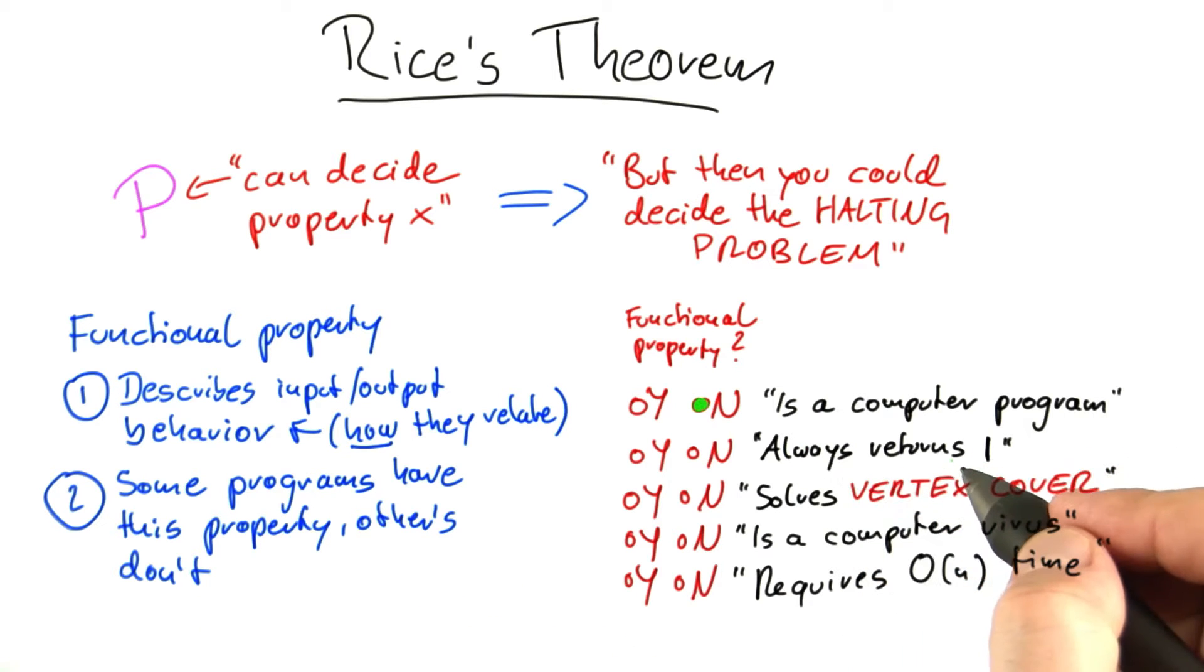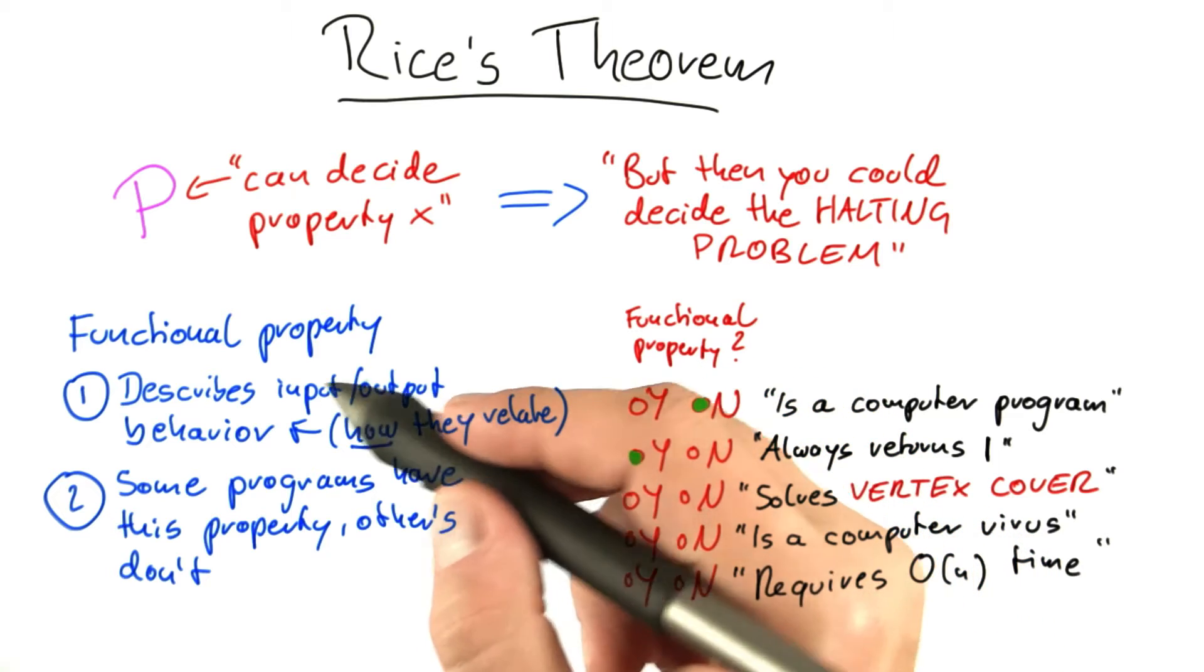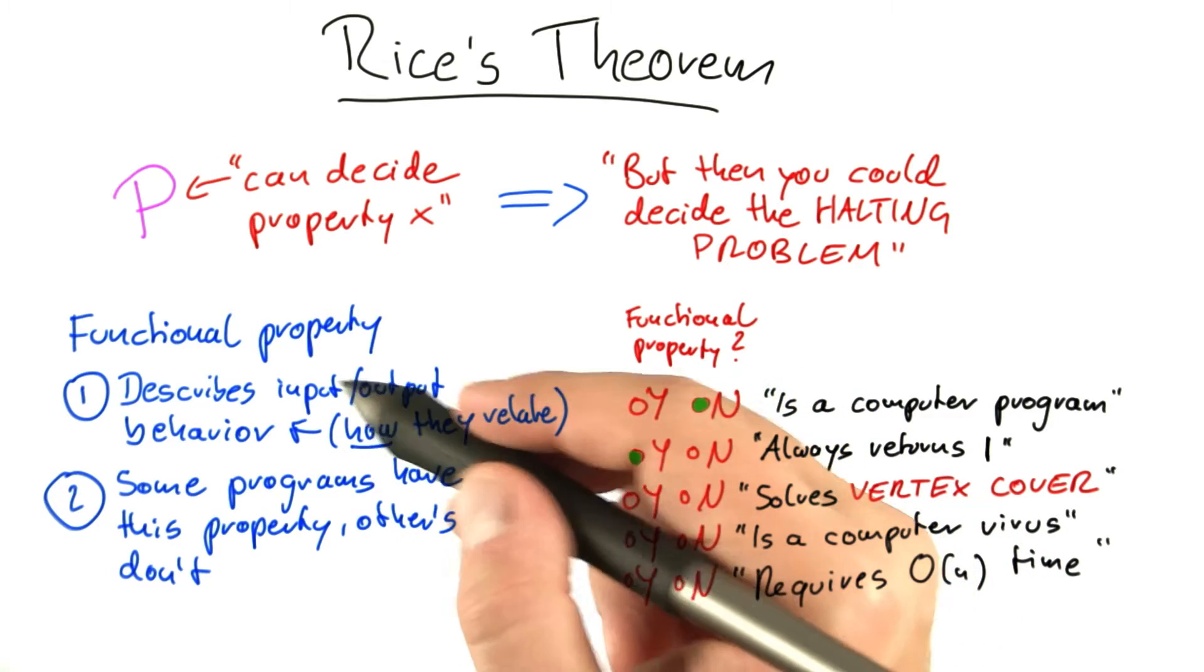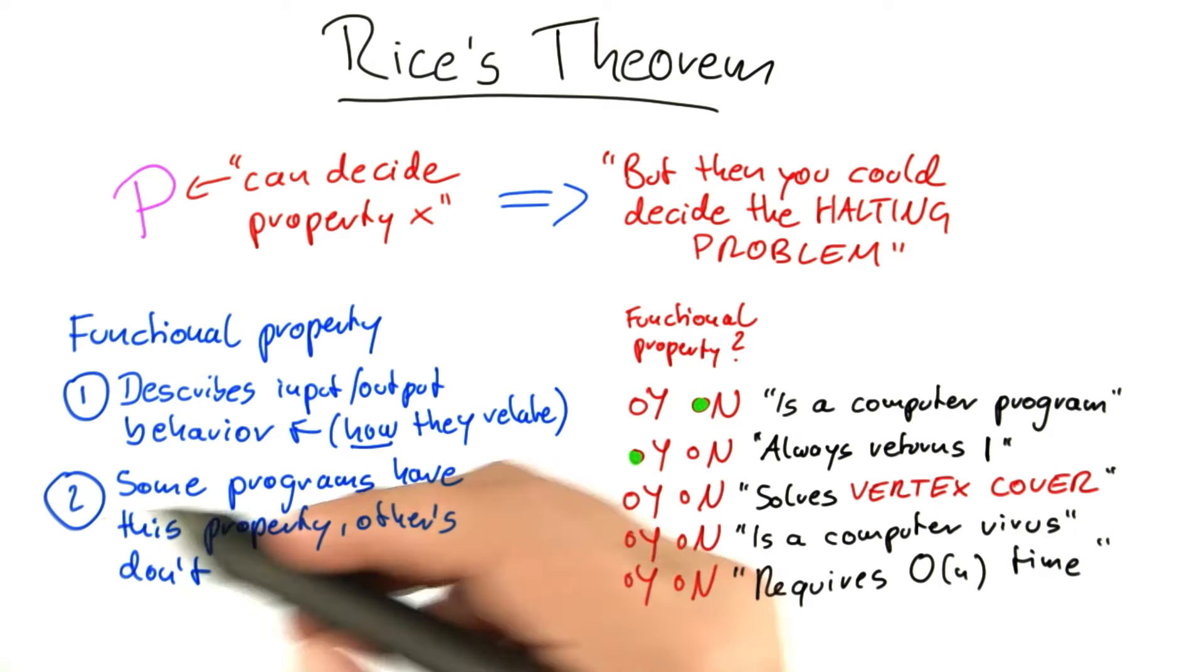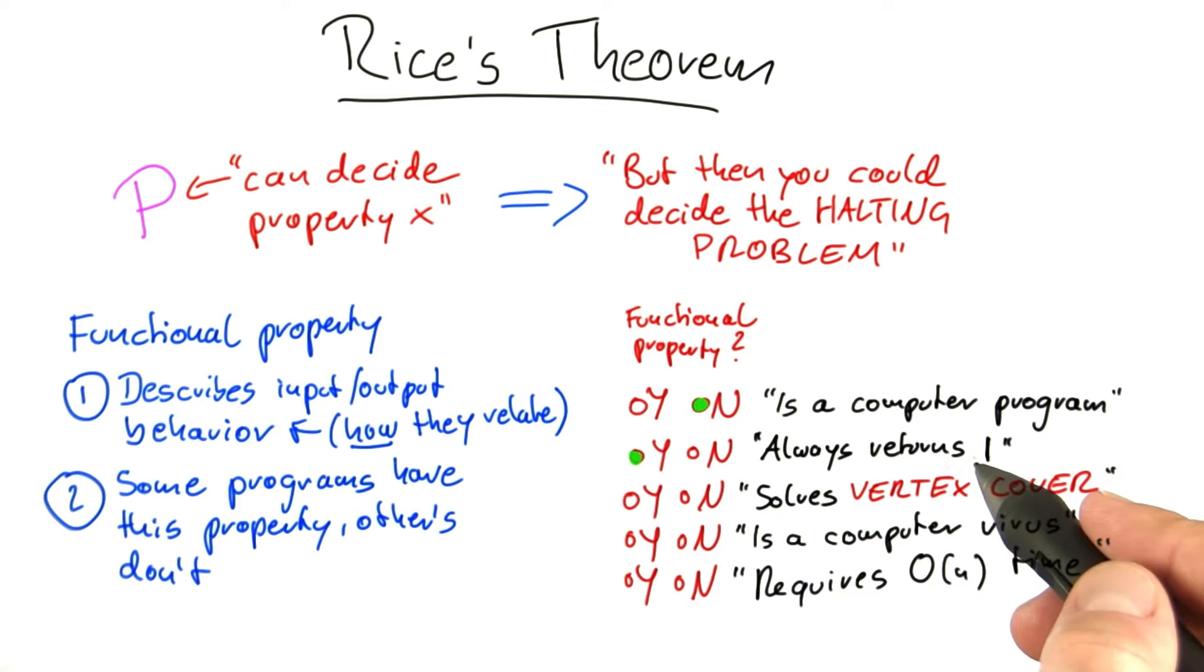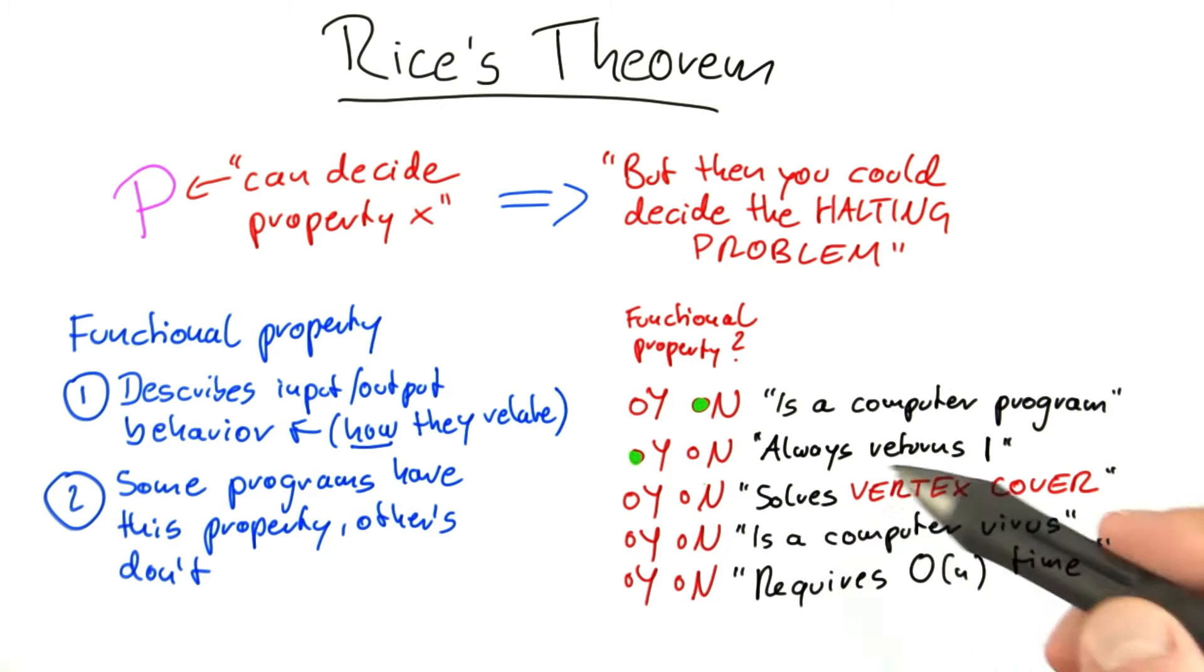A program always returns 1 is a functional property. It describes how output relates to the input - the output doesn't care about the input and is always 1. Property 2 is also satisfied. For example, there are computer programs that always return 2. Property 2 is fulfilled for all the other three as well, so I won't mention it anymore.